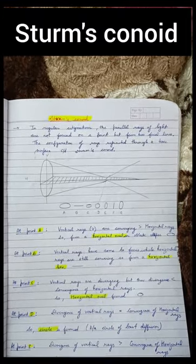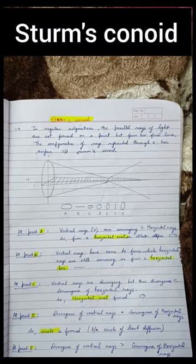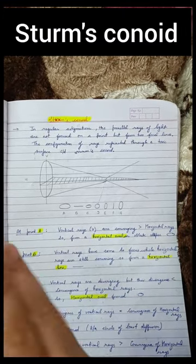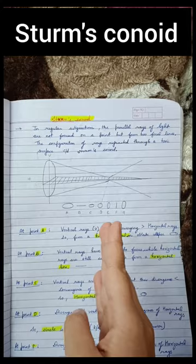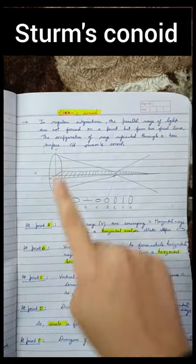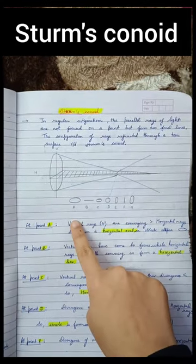What is a toric surface? A toric surface is a surface which has maximum power in one meridian and its perpendicular meridian has minimum power.